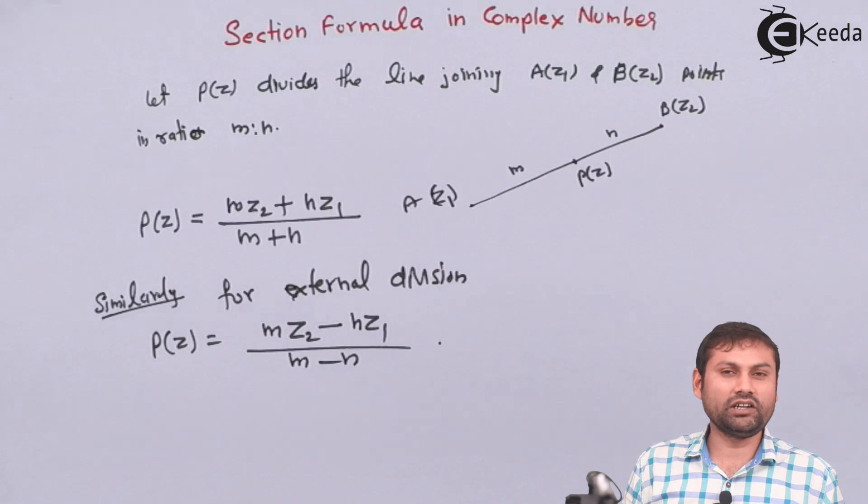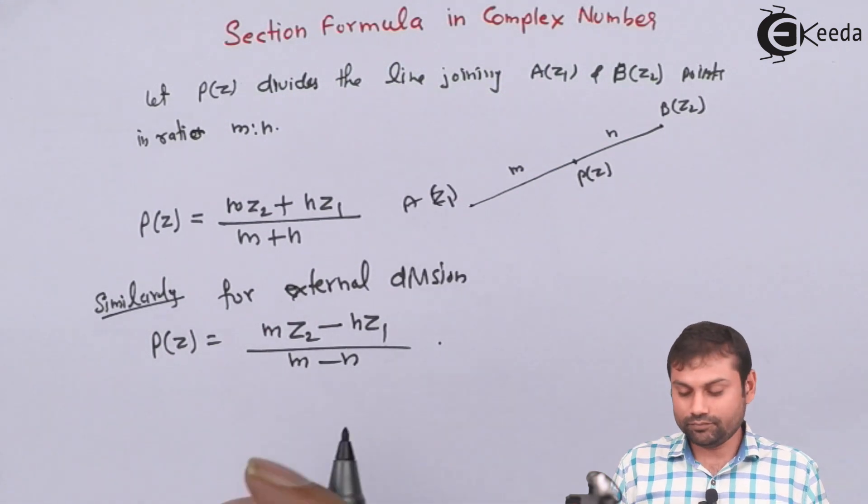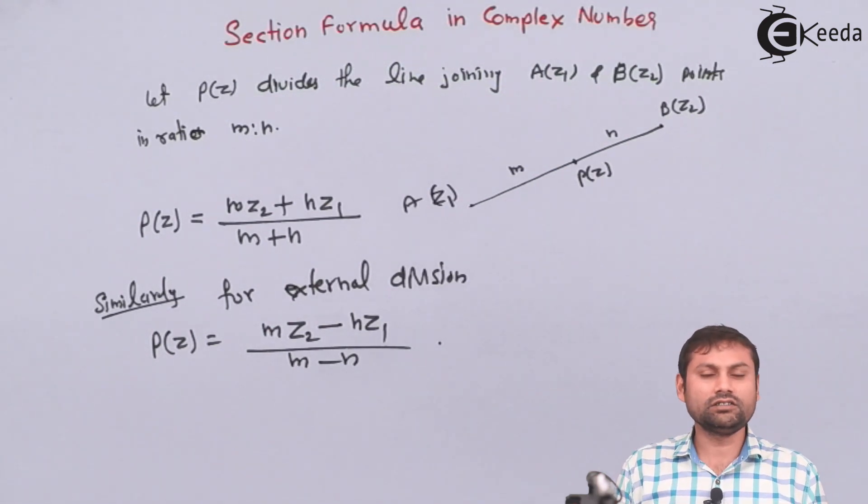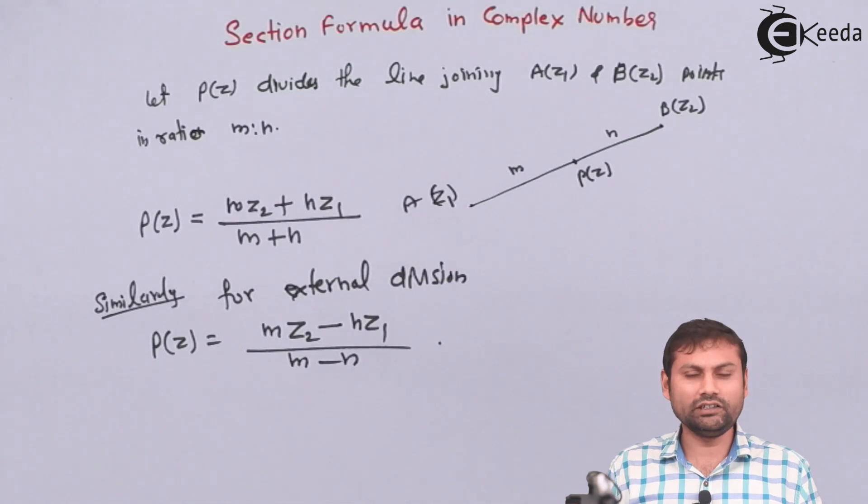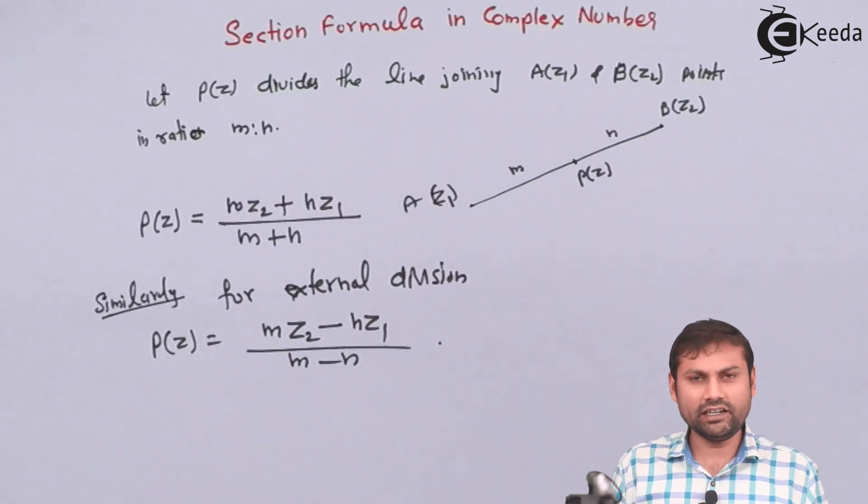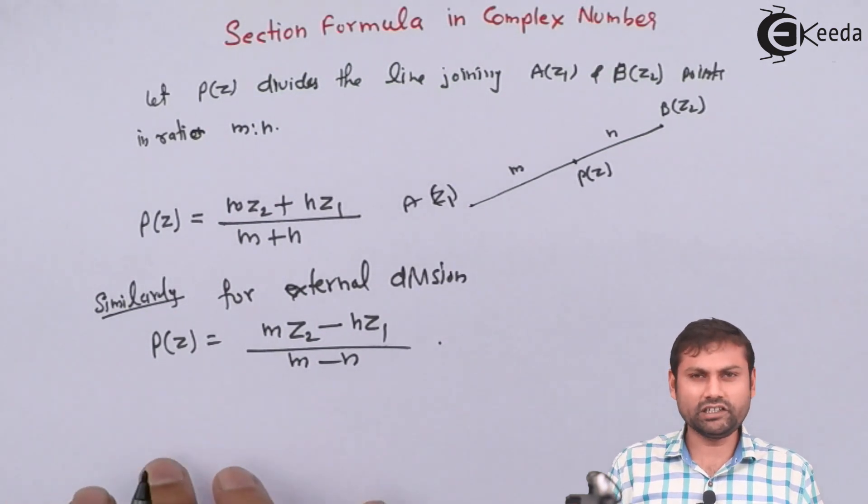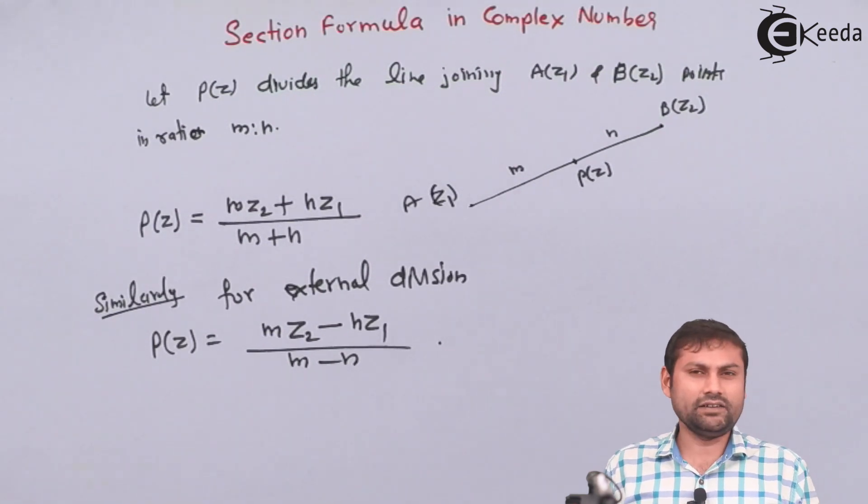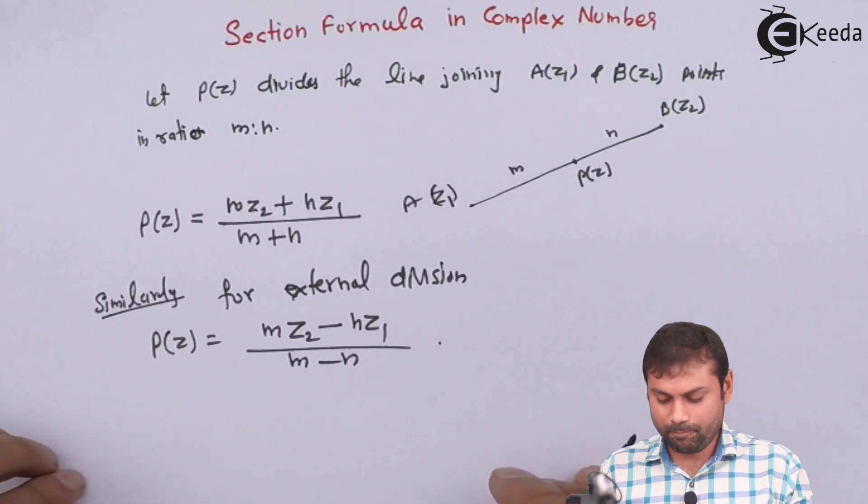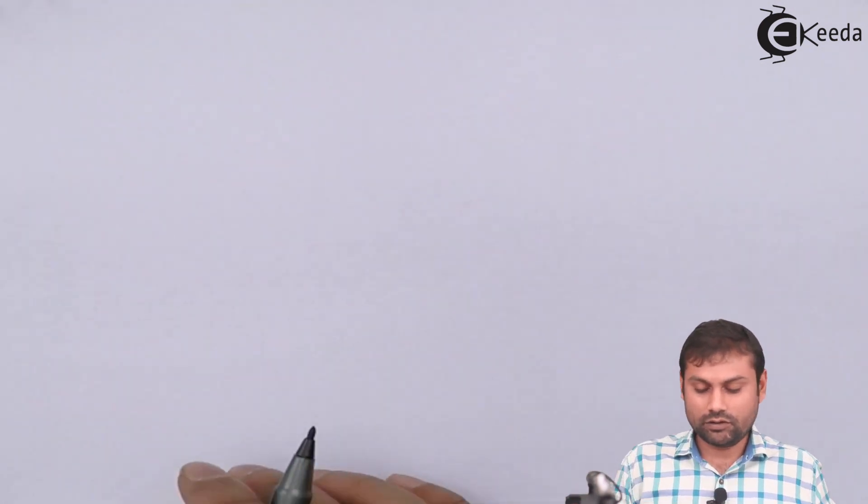So this is the section formula in complex number when P(z) divides line joining two points A(z1) and B(z2). Let's explain it, okay. यह कैसे आया यह formula, so I am going to explain it. So see the explanation.